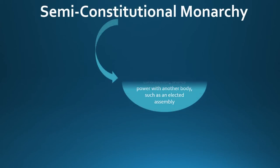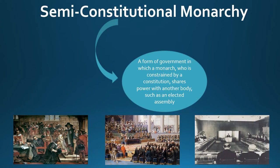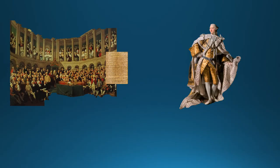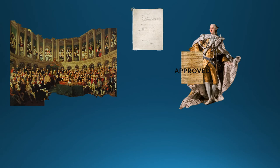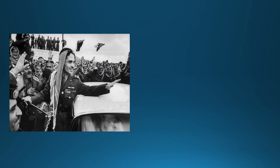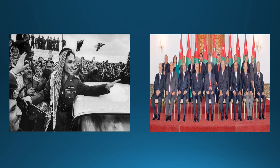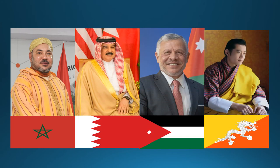A semi-constitutional monarchy is a form of government in which the monarch, constrained by a constitution, shares power with another body such as an elected assembly. The monarch still has power and influence in the country's political system but must share it with the legislature. In some countries the monarch can approve or veto laws; in others the monarch may not, but usually holds a powerful role such as commander of the military and often has authority to appoint people to important political offices. Examples are Morocco, Bahrain, Jordan, and Bhutan.